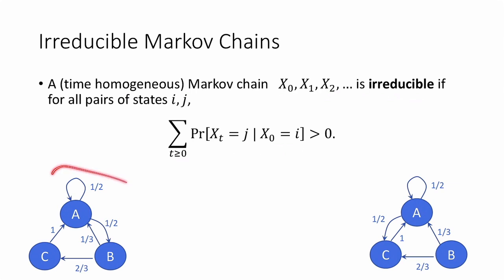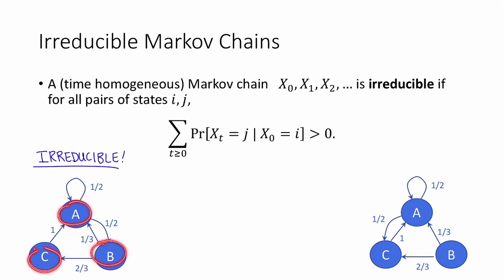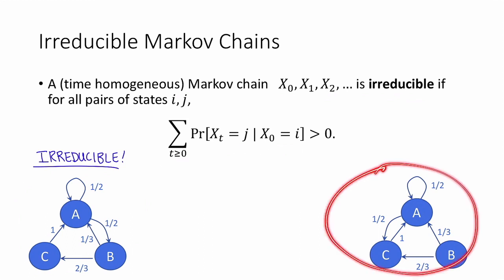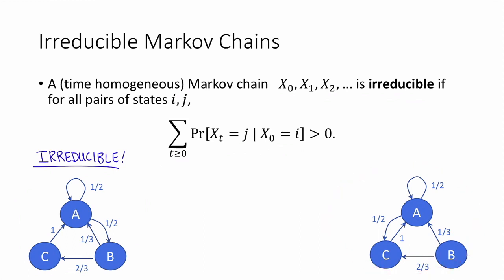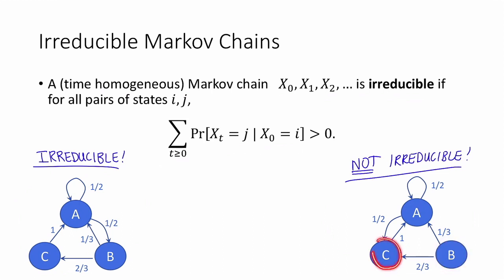For example, this chain here is irreducible. That's because for any one of these three states, there's some positive probability that we'll eventually get to any other state. On the other hand, this Markov chain over here is not irreducible. That's because there's zero probability of getting to state b if we started in state c, for example.